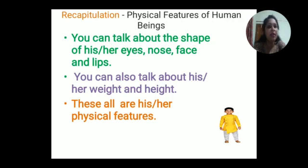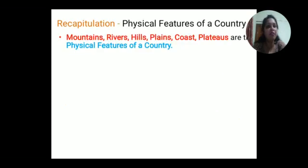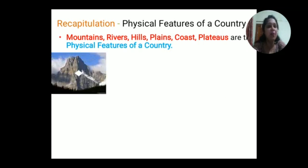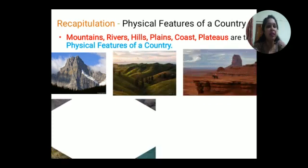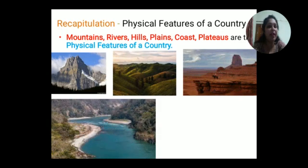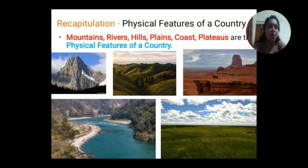In the same way, students, there are physical features of a country also. If we want to describe a country, the country also has some physical features. The physical features of a country are mountains, rivers, hills, plains, coasts, and plateaus. All these are the physical features of a country. These are the mountains, hills, and plateaus. Now you will see the rivers and the coastal plain area, and this is the plain area. So all these features are the physical features of a country.